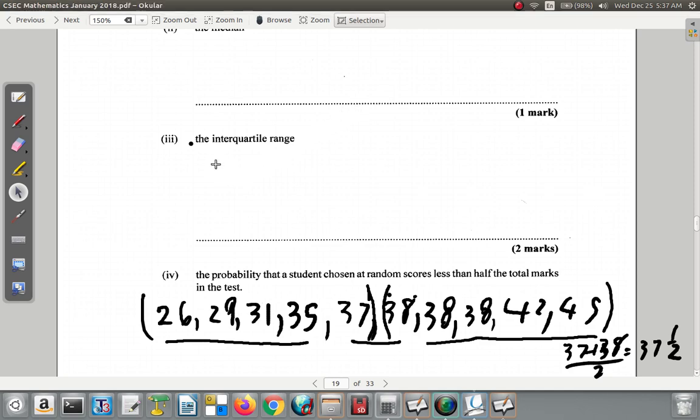Now the interquartile range would be Q3 minus Q1. The first quartile and the third quartile. The third quartile would be 75% or three quarters. We have the lower 50% and the upper 50%. The lower 50%, half of that is 25%.